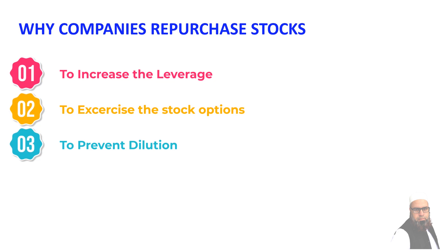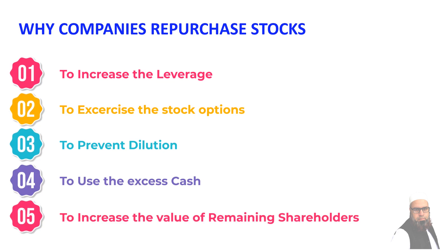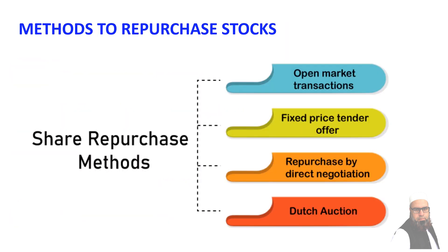Another reason to repurchase is to prevent dilution — when a company issues new shares, it can dilute the ownership stake of existing shareholders, and buying back shares helps offset this. A company may also have excess cash, due to a one-time cash inflow such as a sale of a division, or simply by generating more free cash flow than it needs to service its debt. Note that repurchased stock is called treasury stock, shown as a negative value on the balance sheet. On the consolidated balance sheet, treasury shares are deducted to find shares outstanding, and the price paid is deducted when determining common equity.